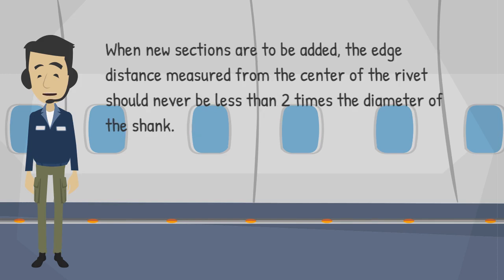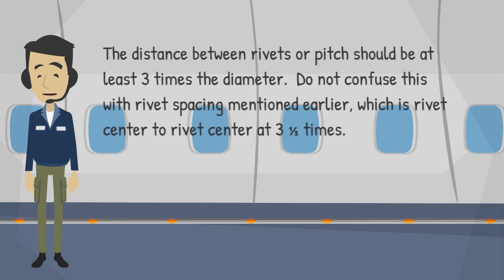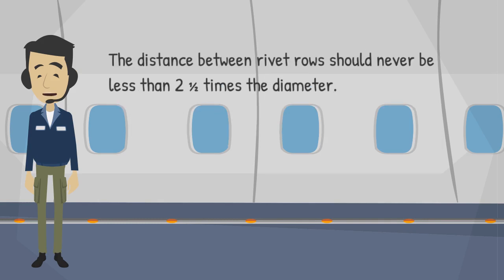When new sections are to be added, the edge distance measured from the center of the rivet should never be less than 2 times the diameter of the shank. The distance between rivets, or pitch, should be at least 3 times the diameter. Do not confuse this with rivet spacing mentioned earlier, which is rivet center to rivet center at 3 and 1/2 times. The distance between rivet rows should never be less than 2 and 1/2 times the diameter.